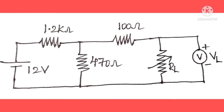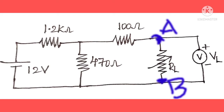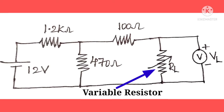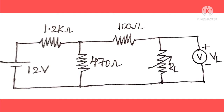The third stage of maximum power transfer theorem will be carried out in various steps. Here, in between the terminals A and B we have connected the variable load resistor and also the voltmeter. The load resistor is varied step by step, and when we vary the load resistor the voltage across it will also vary. We can observe that at a particular value of load resistor, when it is equal to Rth, the power consumed by this resistor will be maximum.